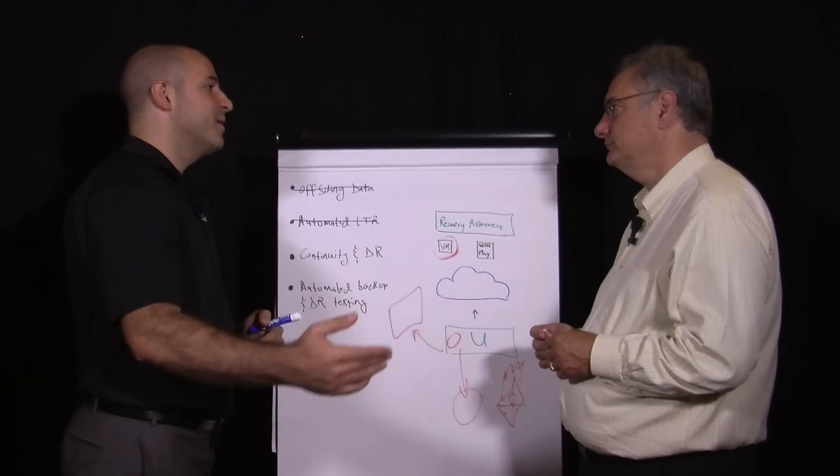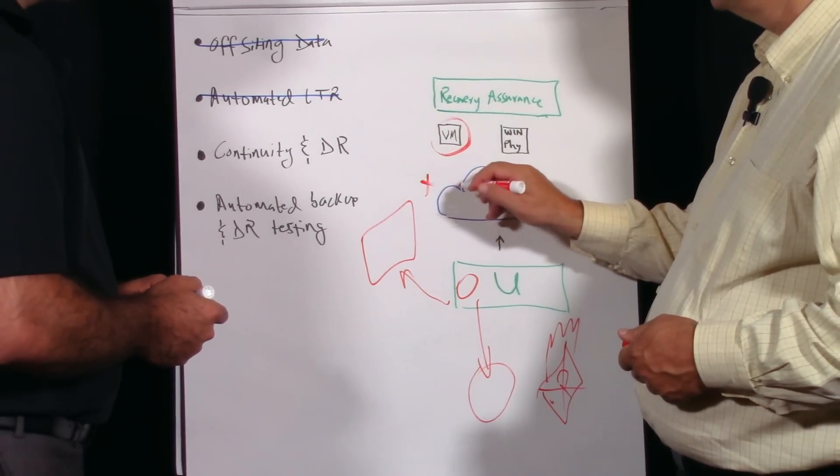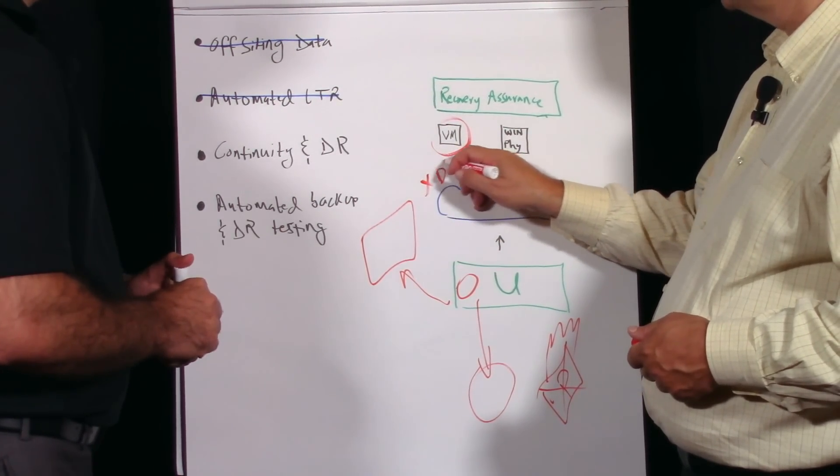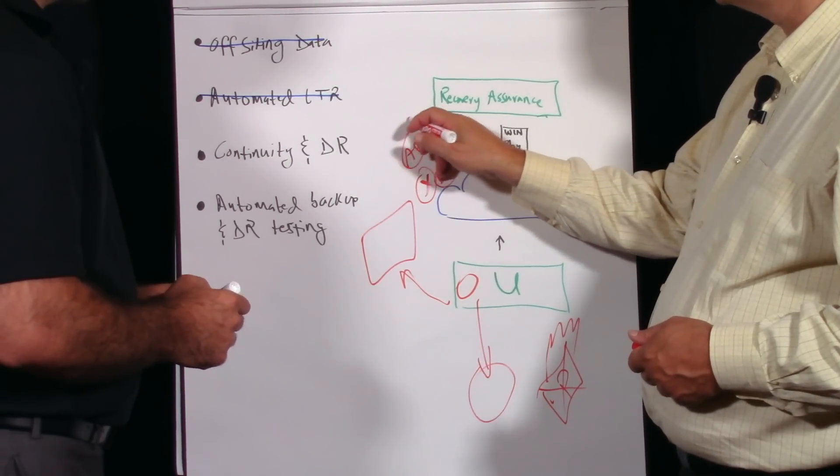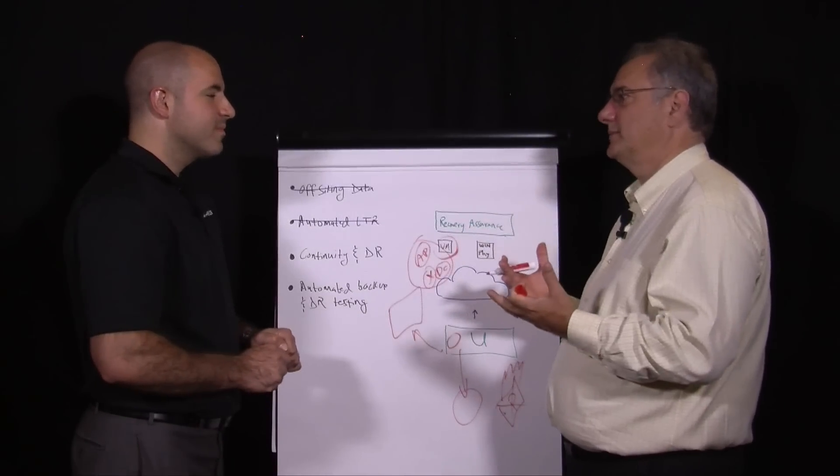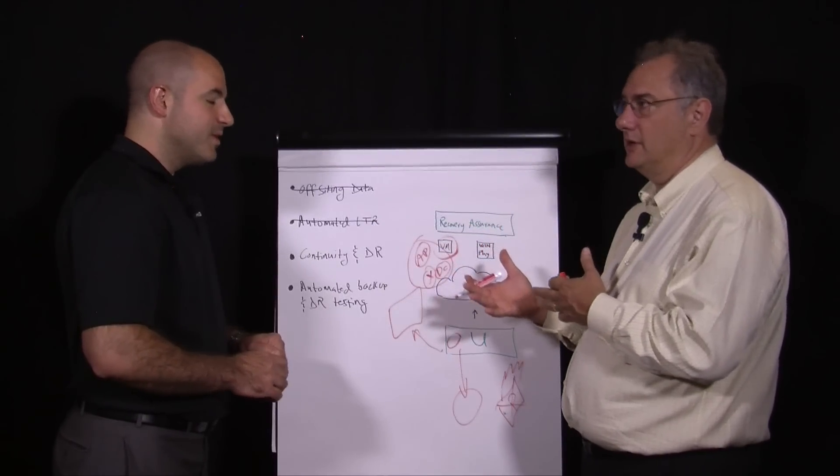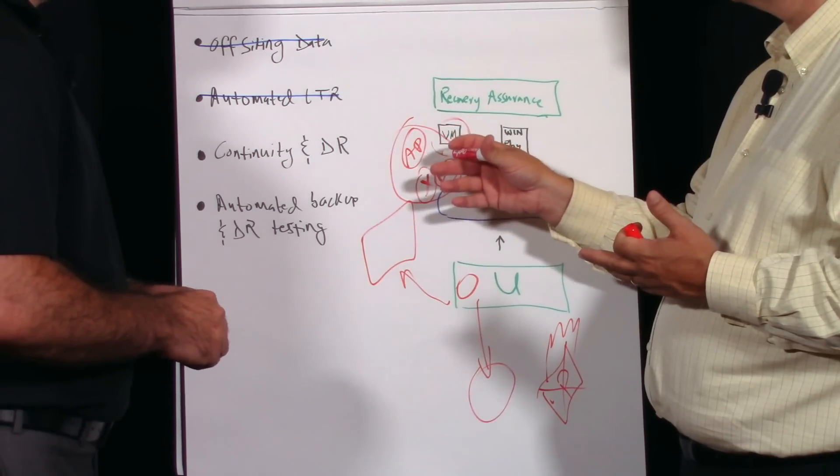I've got an Exchange server, maybe a domain controller, and I don't know, maybe an Active Directory server over here. And you're saying I can put all these three together and whatever else I need, start them all up together in the appropriate order and then do some sort of testing to figure out that this whole thing is good.